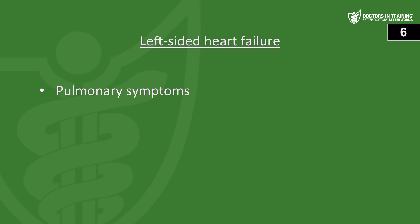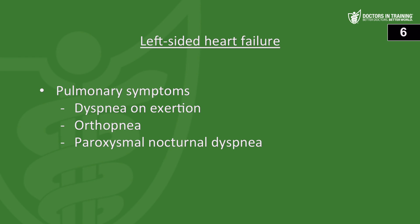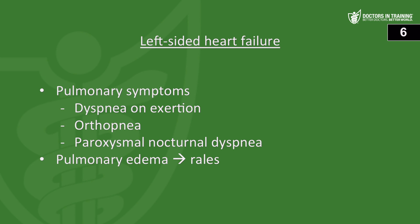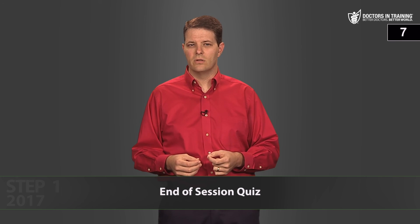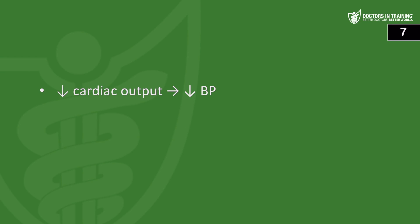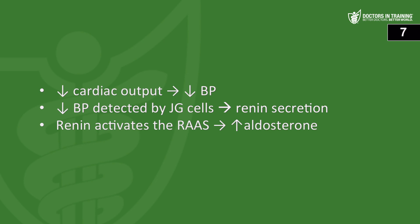Question two: what are the signs of left-sided heart failure? Left-sided heart failure causes pulmonary symptoms — L for left, L for lungs — such as dyspnea on exertion, orthopnea, paroxysmal nocturnal dyspnea, pulmonary edema, and crackles on physical exam. Question three: how does poor cardiac output result in increased aldosterone? Decreased cardiac output leads to low blood pressure detected by the juxtaglomerular cells, which secrete renin, activating the RAAS, ultimately increasing aldosterone levels.